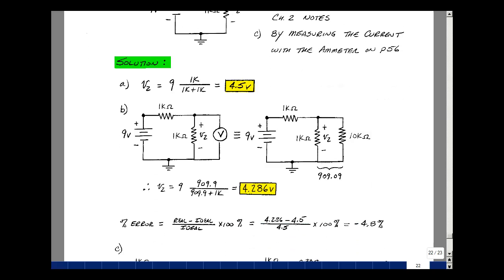You can actually calculate a percentage error due to taking the measurement. Let's define error as the real result minus the ideal over the ideal times 100%. So what we were actually measuring would be 4.286 volts. Ideally we expect four and a half and then four and a half here times 100%. That's a minus 4.8% error.